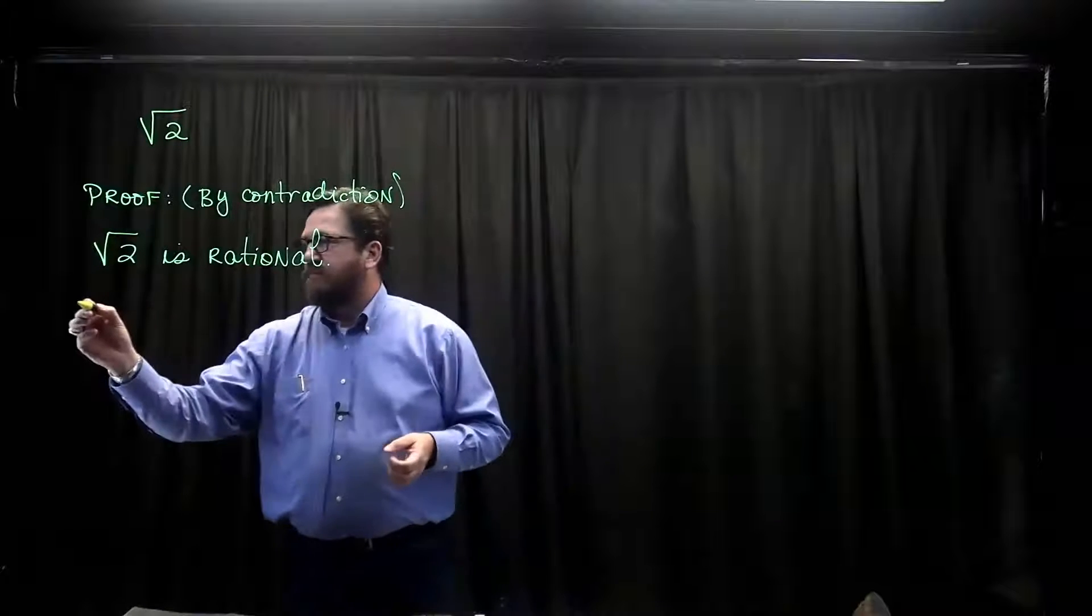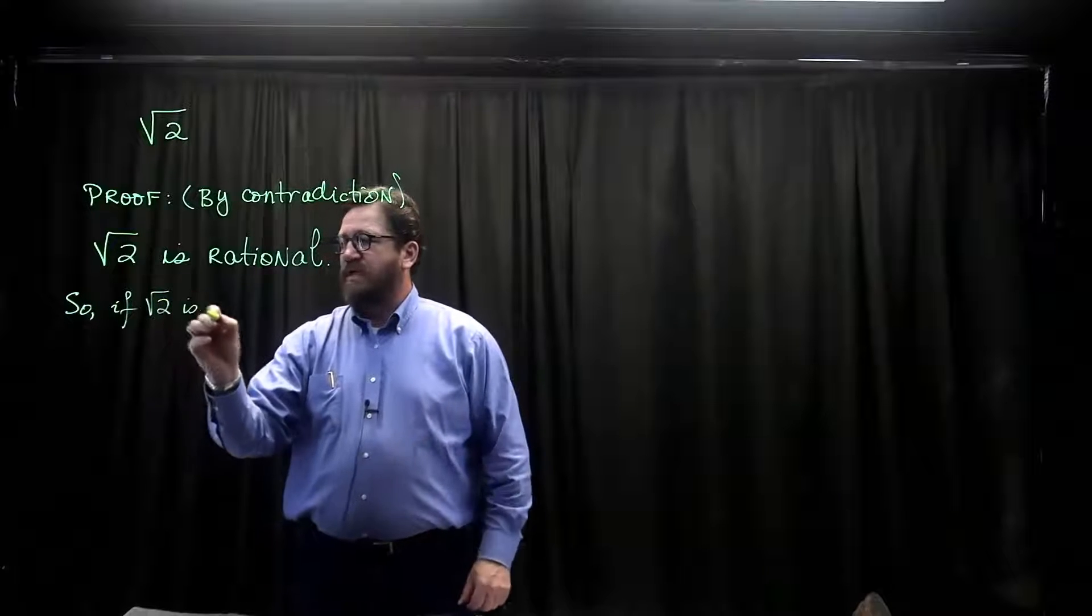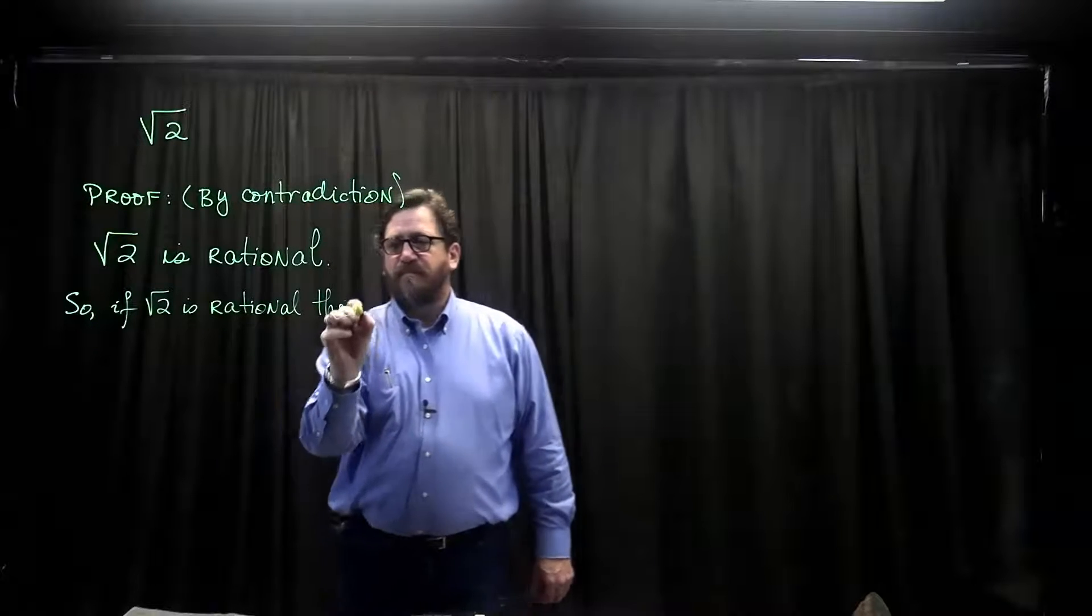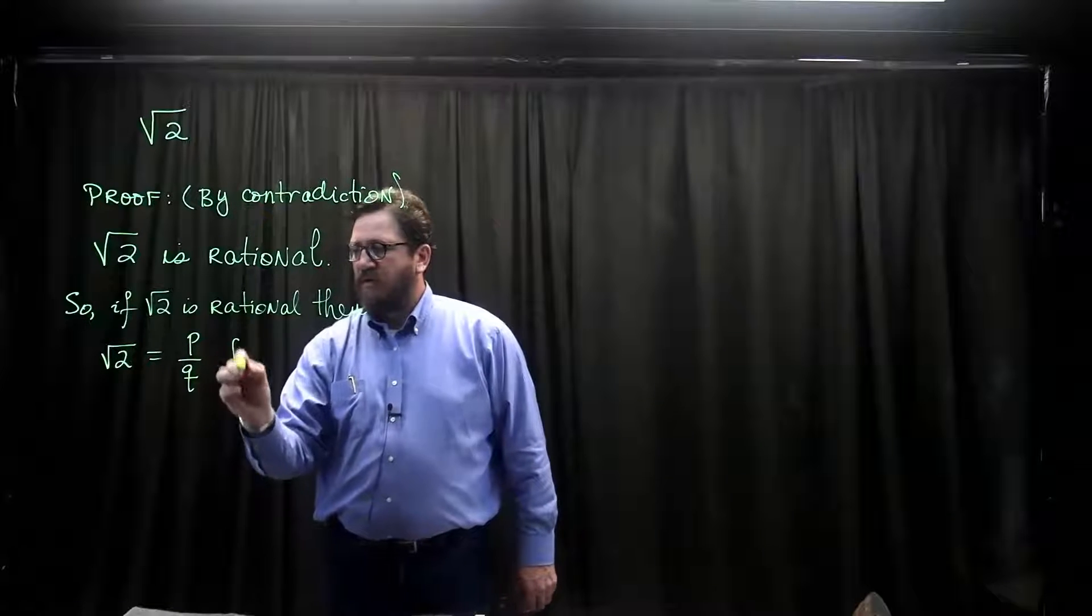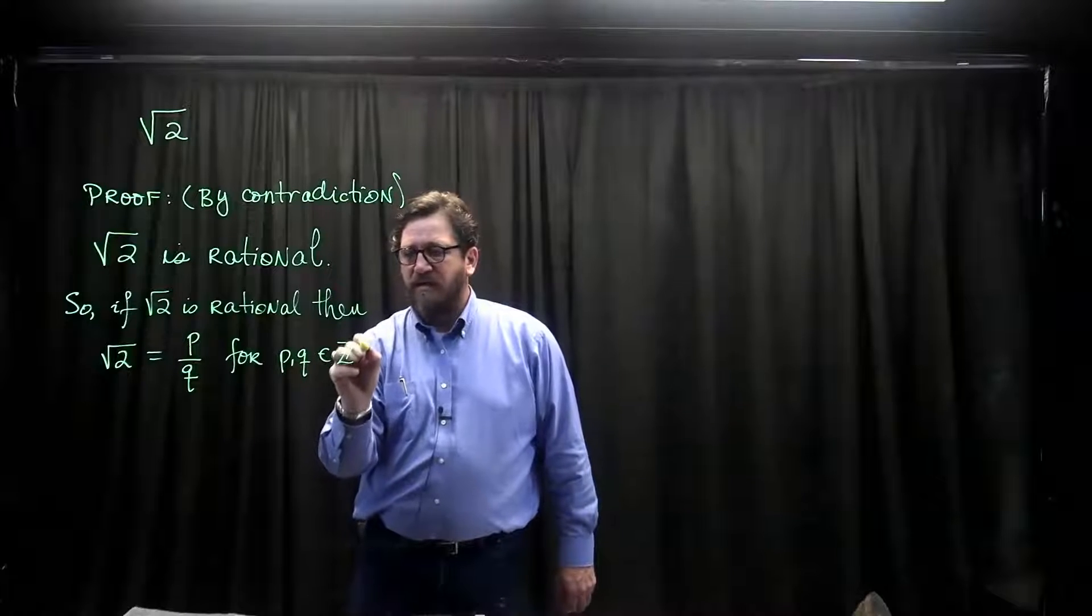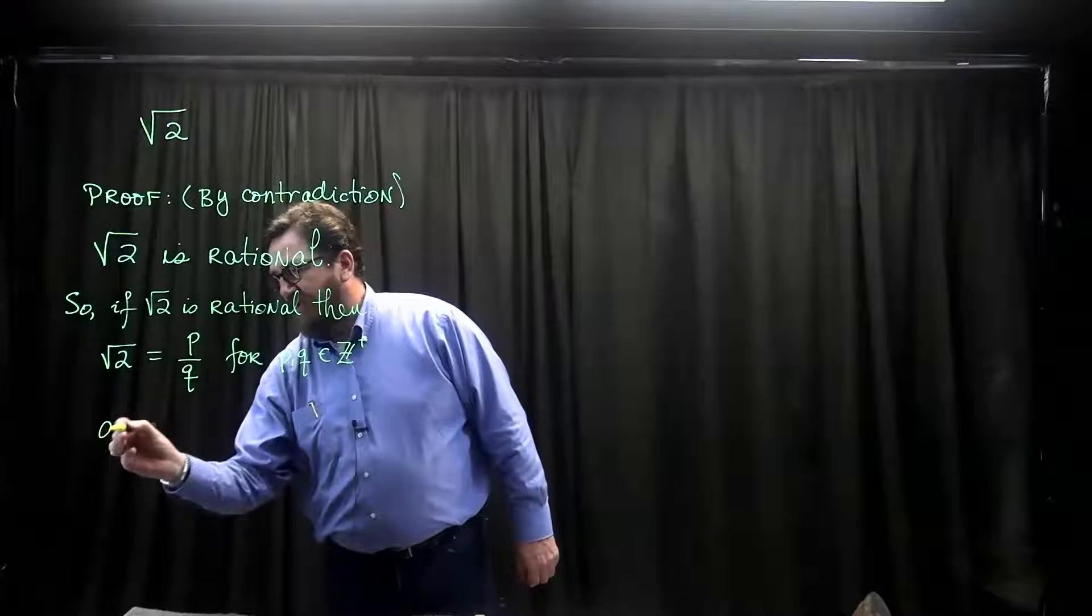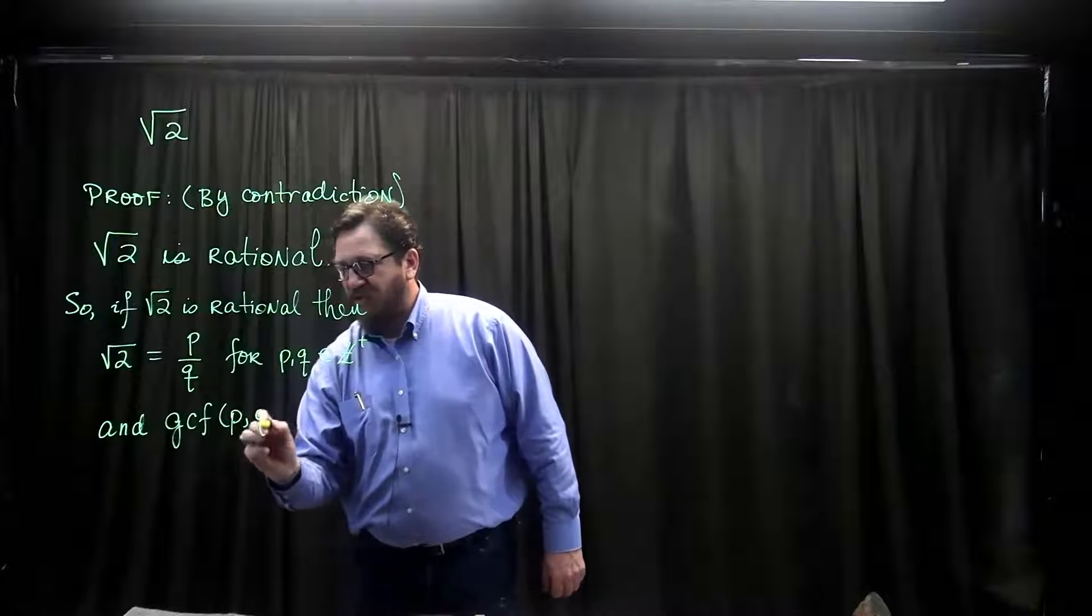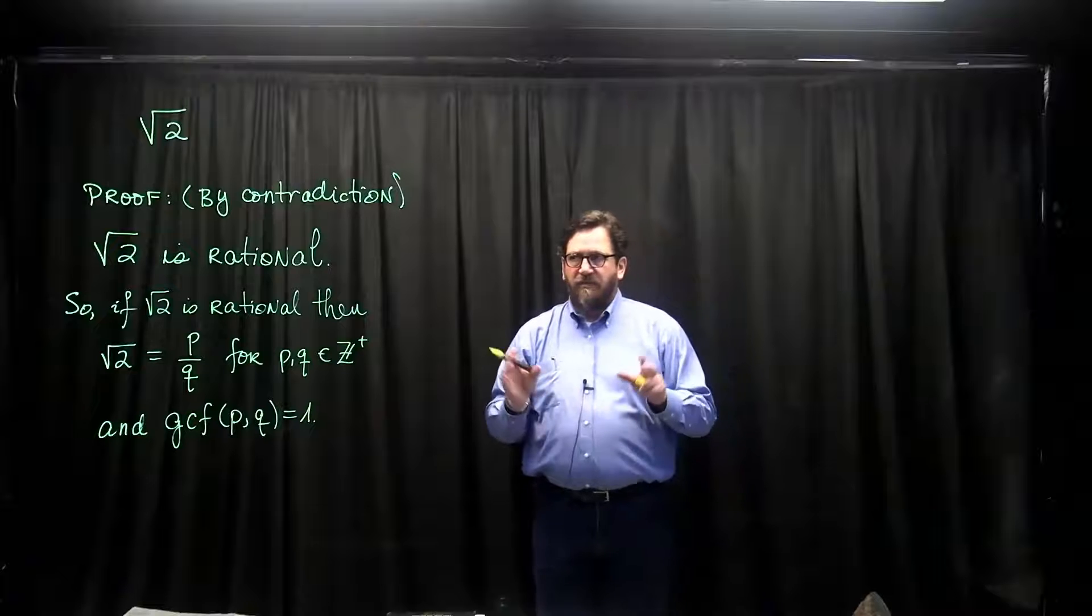So, if the square root of 2 is rational, then the square root of 2 is equal to p over q for p and q elements of the positive integers. And this is an important piece in this proof: the greatest common factor of p and q is 1. So there we go.